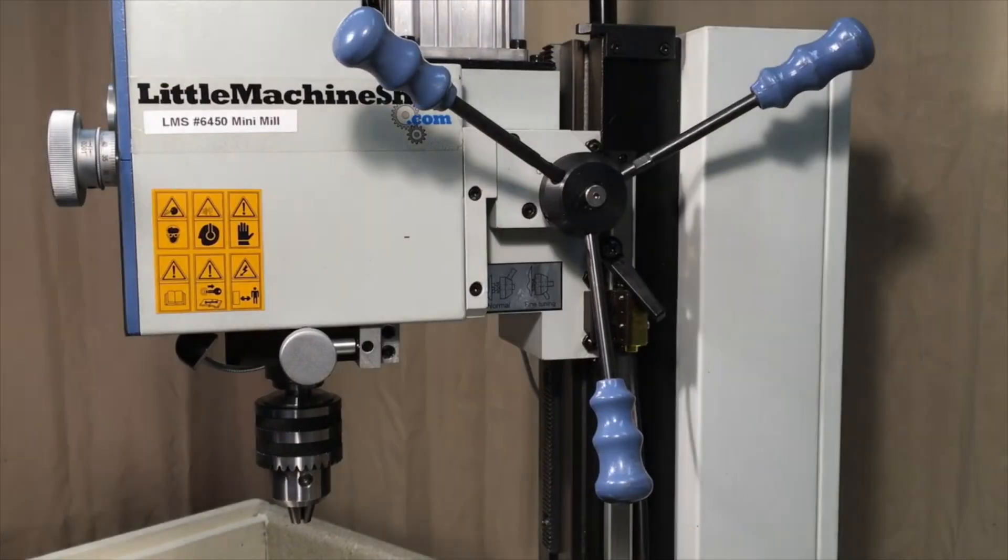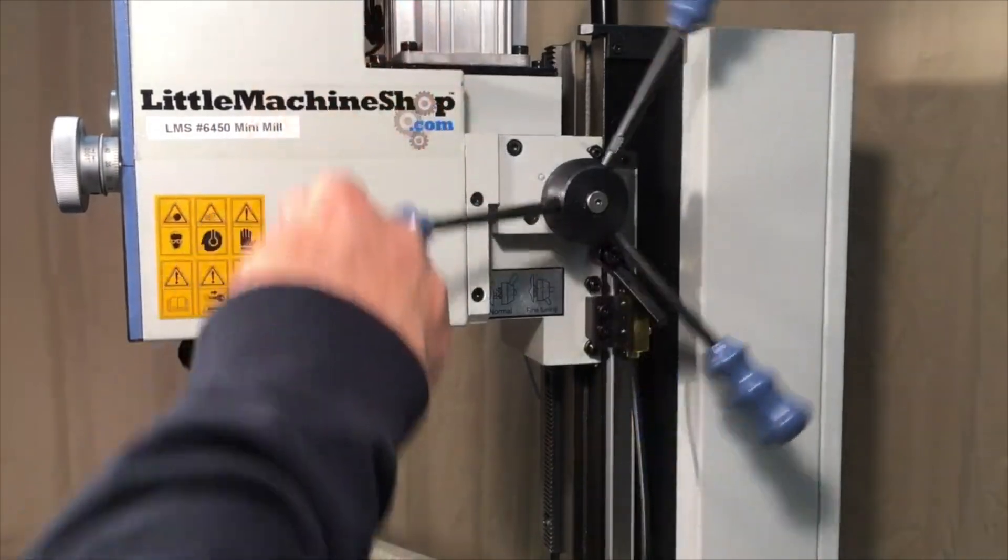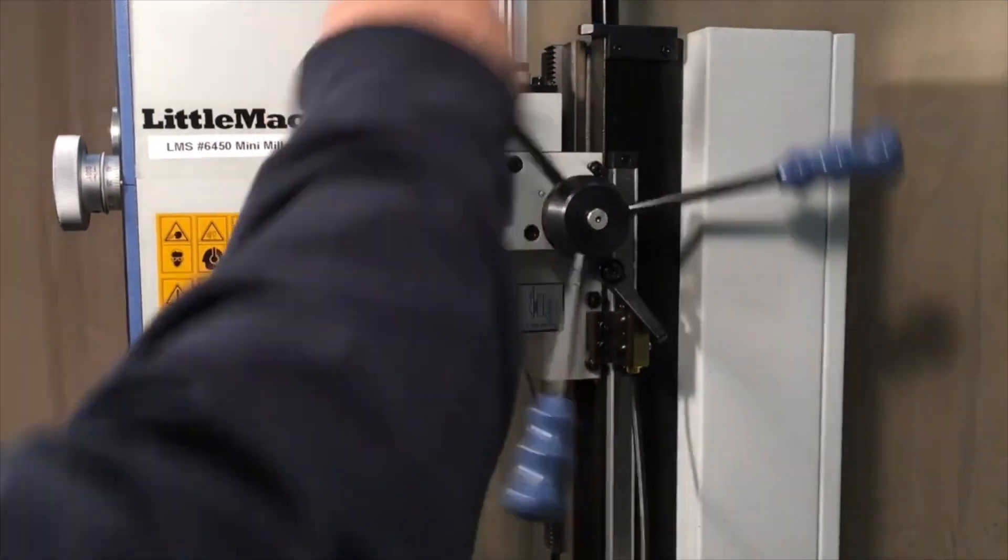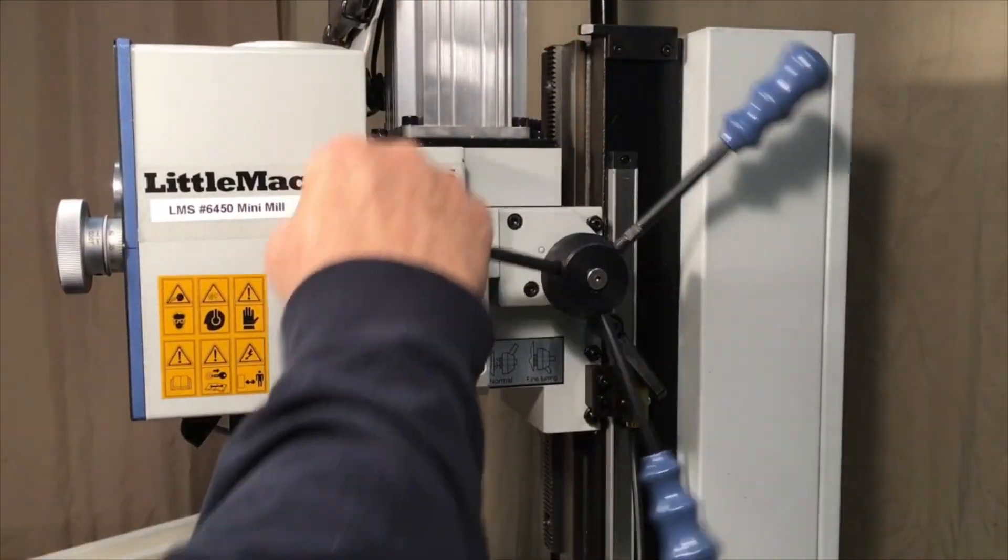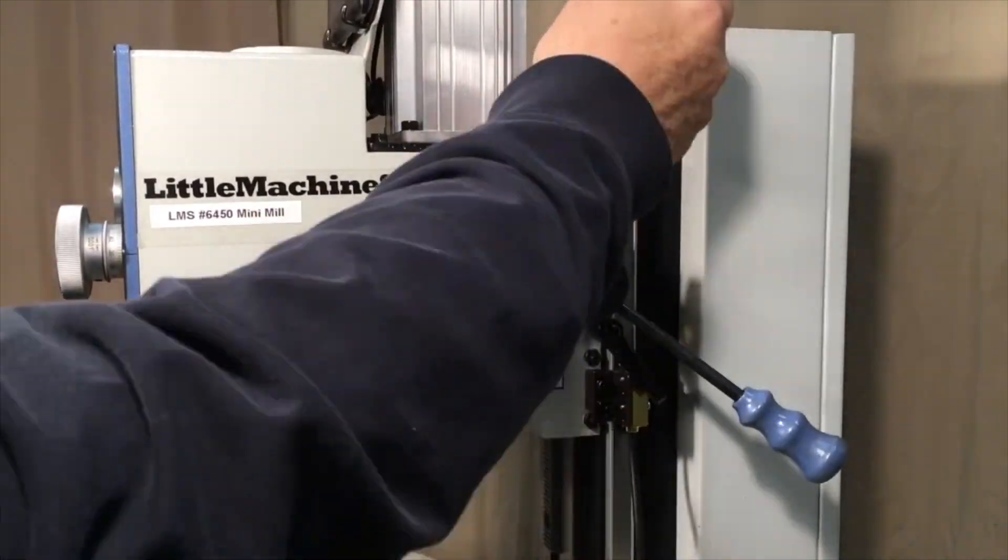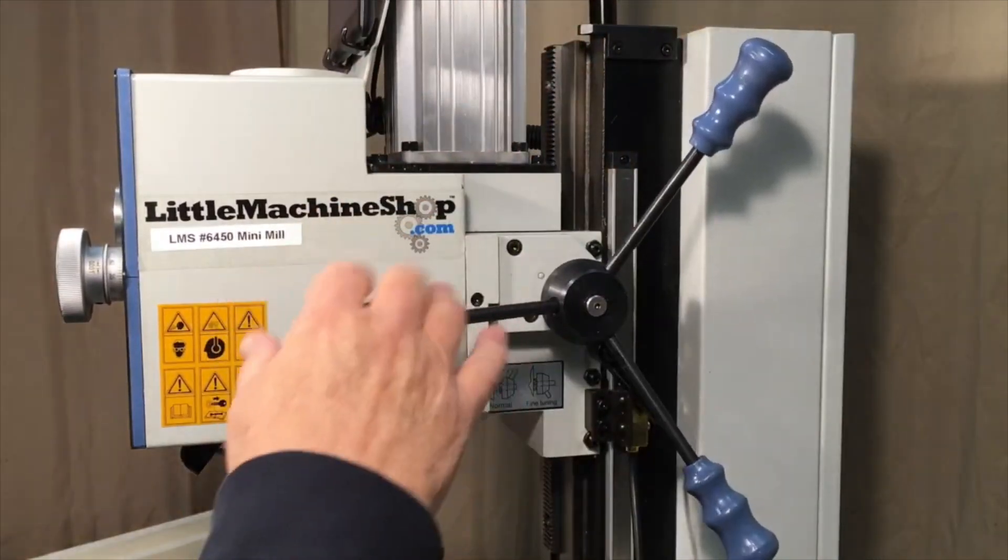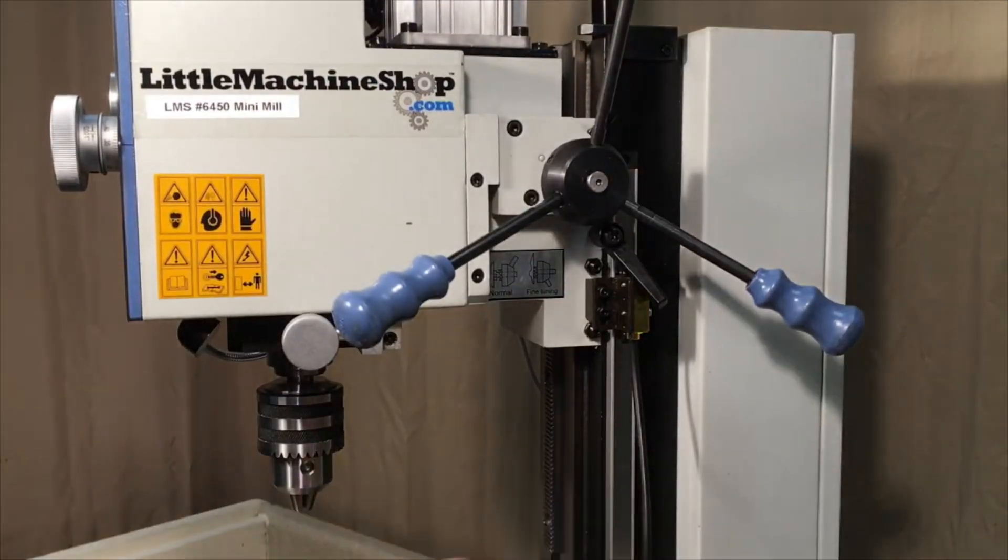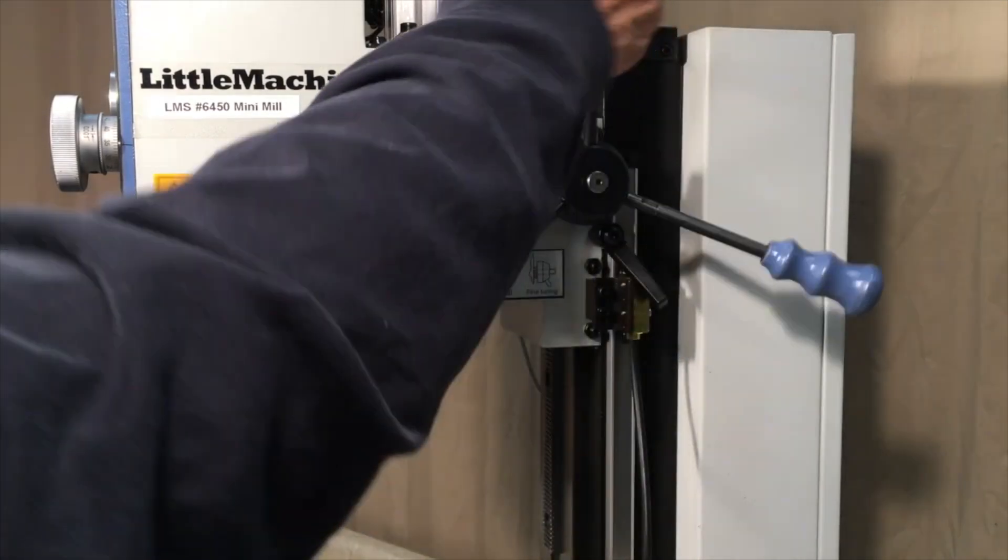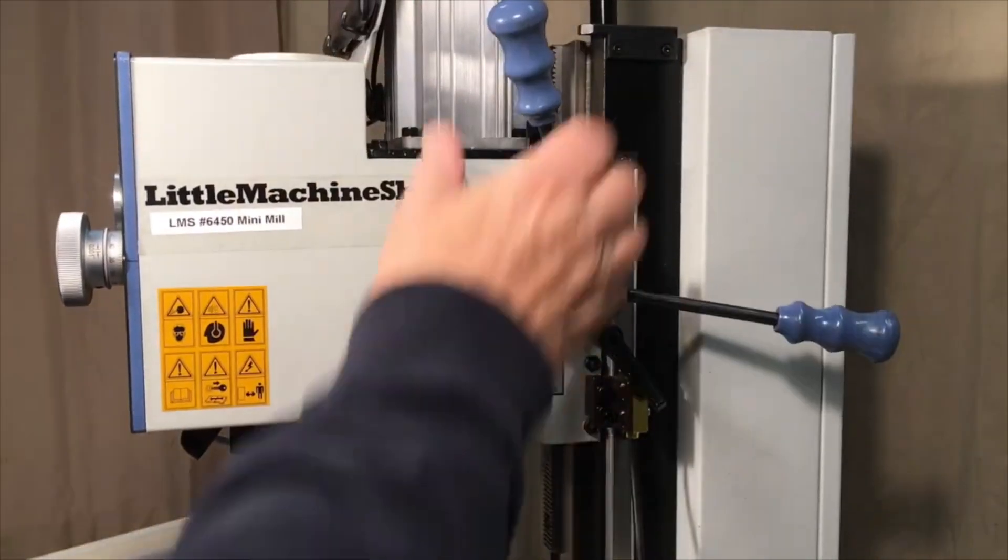I briefly demonstrated earlier in the video how the three spoke hand wheel can move the head up and down much like a drill press. And the hand wheel is used primarily for drilling operations as opposed to milling. But it can also be used in milling operations if you want to lift the head up to change tools or just to get the tool out of the way to clean off some swarf or whatever. Maybe you want to remove your work piece from the vise to take some measurements. So it's nice to have this quick way to move it up and down.